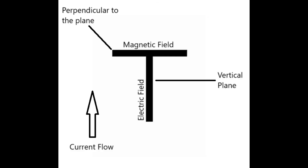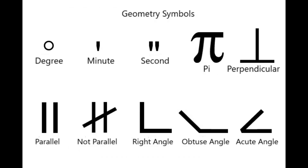That leaves us with the T-shape. When an electric current propagates through a conductor, it creates an electric field along the plane of the conductor. As the current flows, it also creates a magnetic field that's perpendicular to the electric field. This interplay between electric and magnetic fields is the basis for many technologies and scientific principles that we rely on daily. These perpendicular fields can be visualized as a capital T. In mathematics, the perpendicular symbol is an upside-down T.